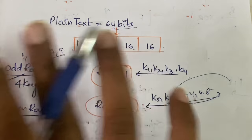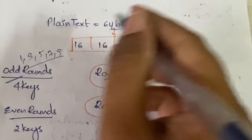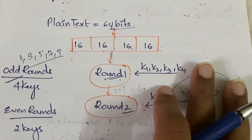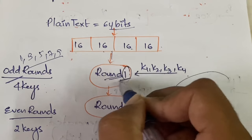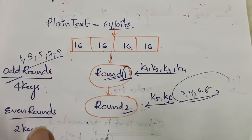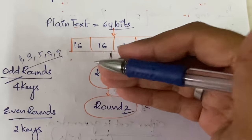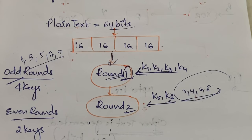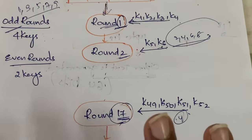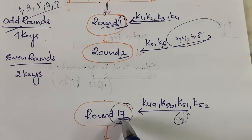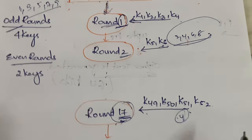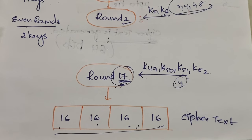To summarize: the 64-bit plain text is divided into four equal 16-bit parts and sent into round one. There are 17 rounds total. For odd rounds you have four keys; for even rounds you have two keys. The output of each round acts as input to the next round, continuing up to round 17. The final output is four 16-bit blocks that combine to give the 64-bit ciphertext.